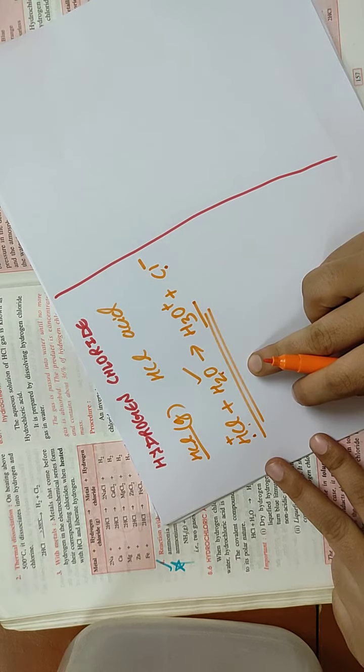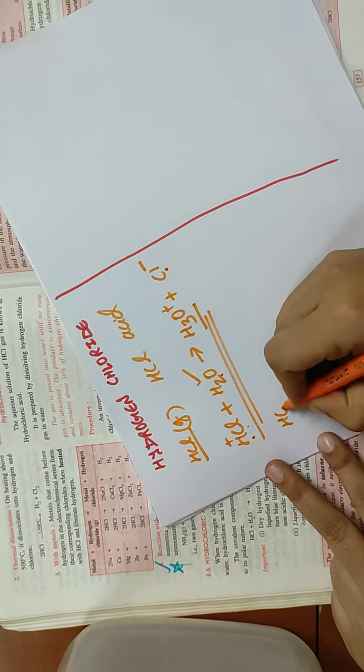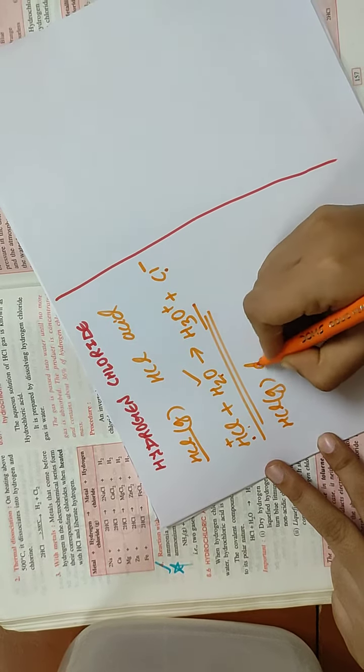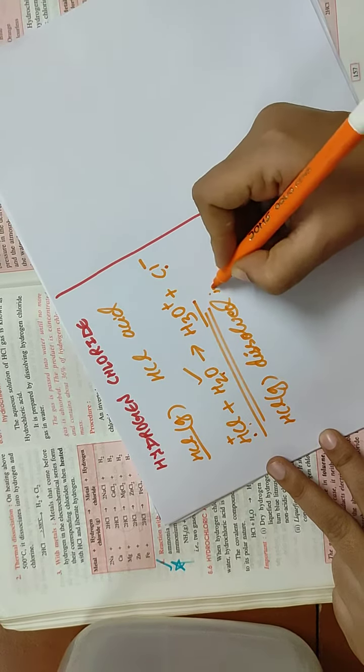How is hydrochloric acid formed? Hydrochloric acid is formed when HCl gas is dissolved in water.